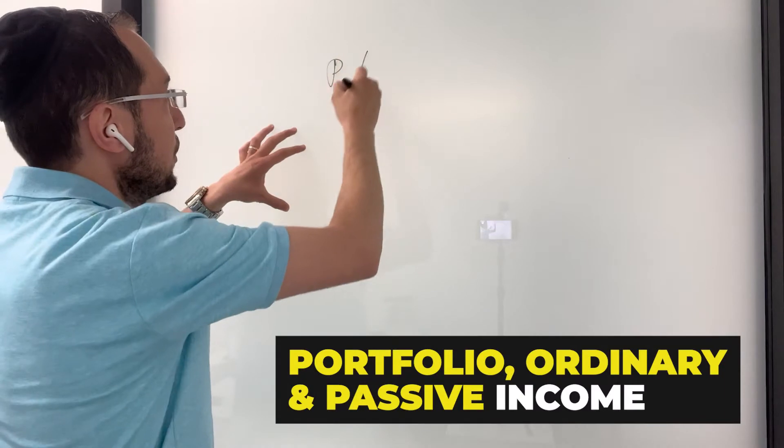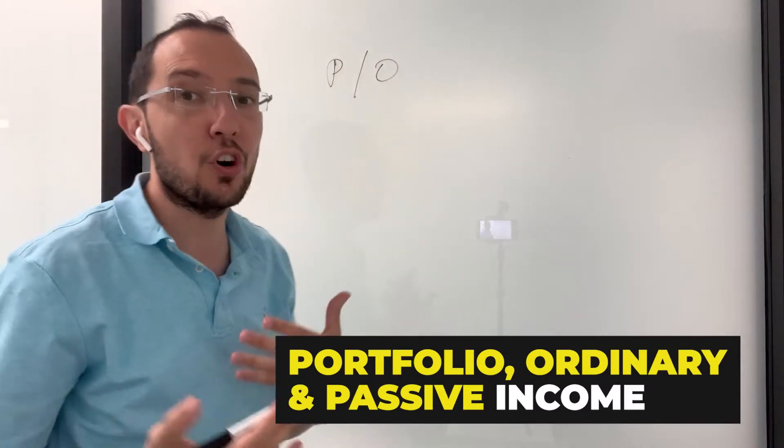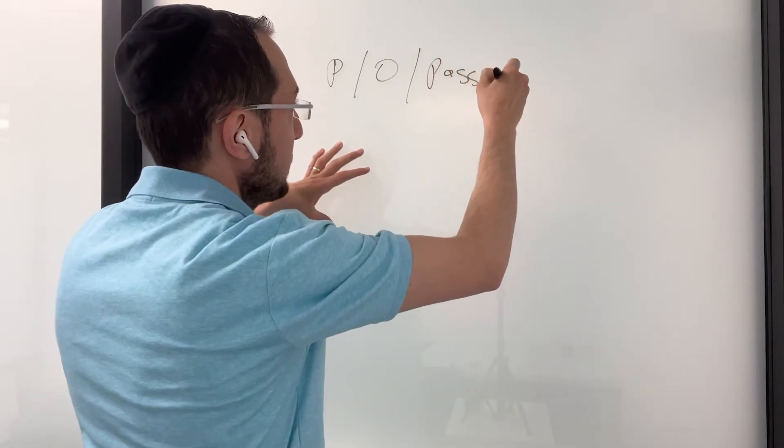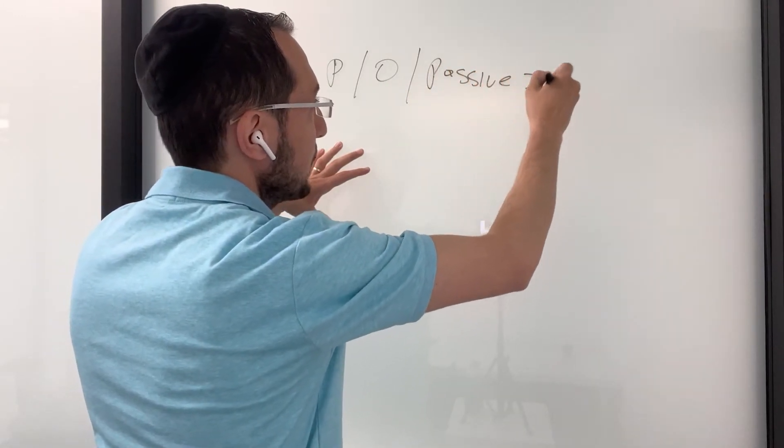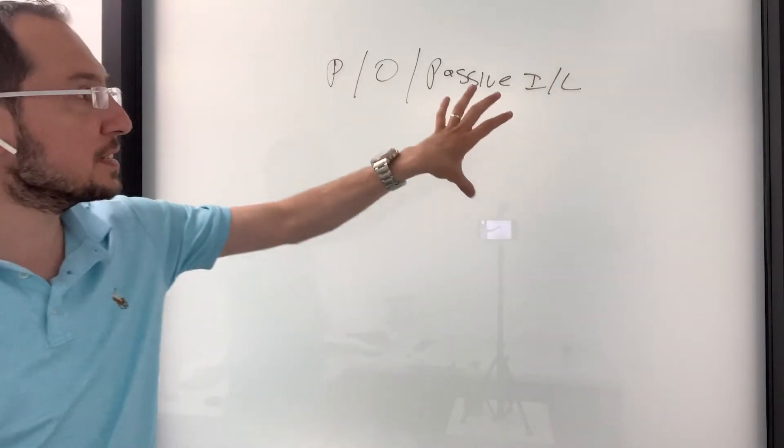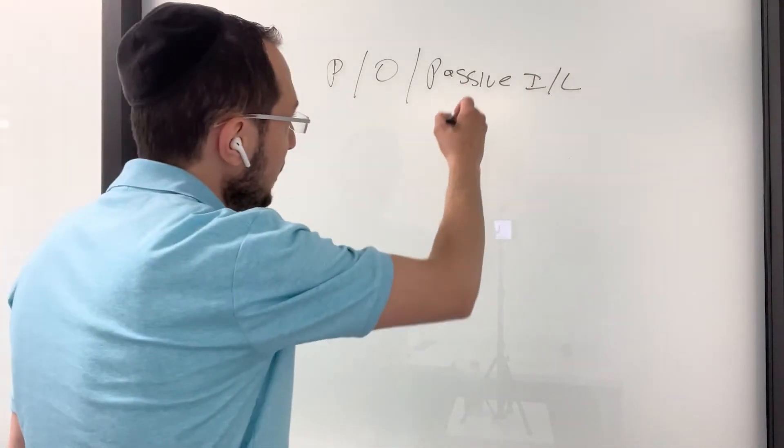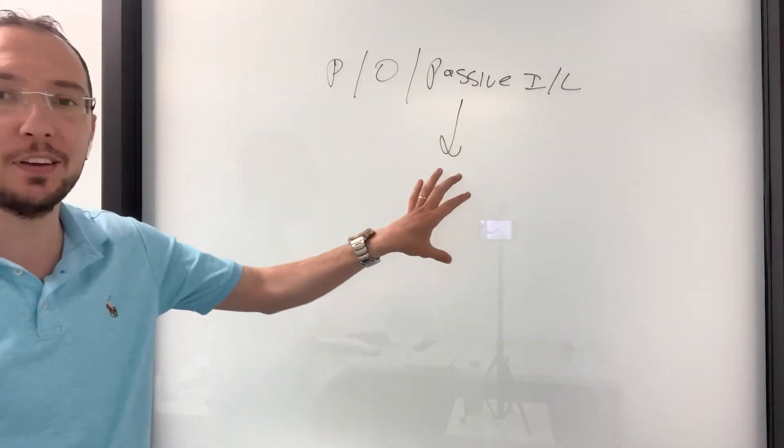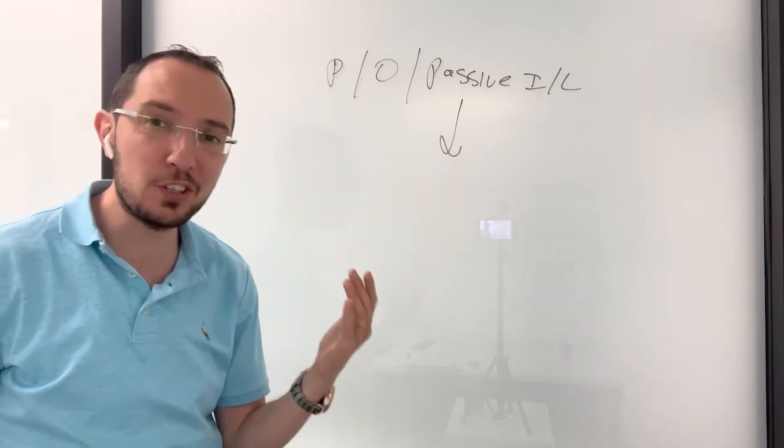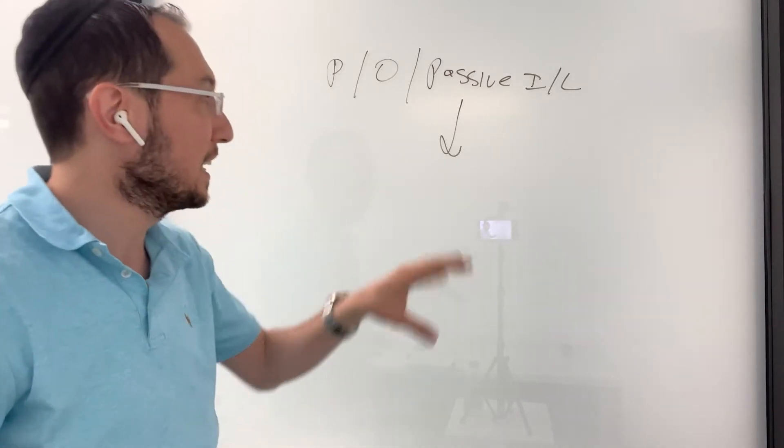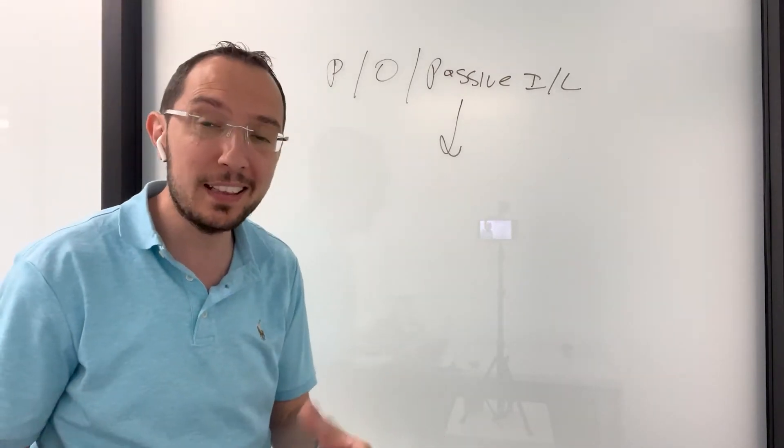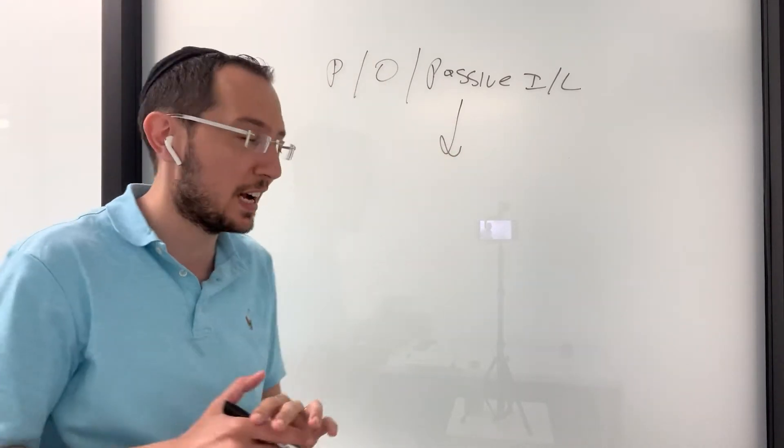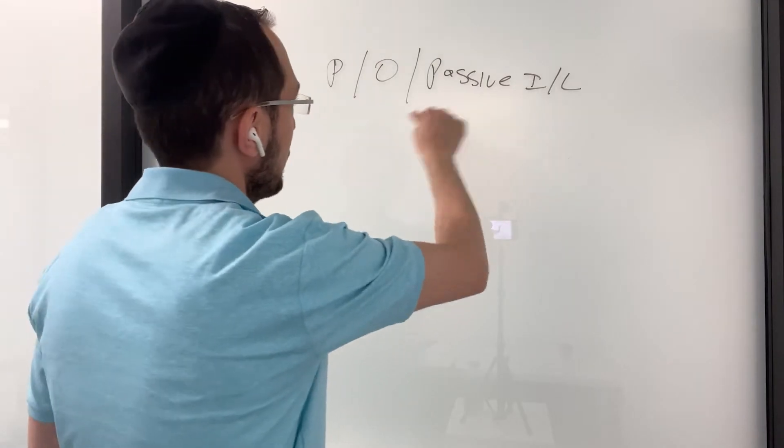We've got portfolio income, we've got ordinary income, which is your earned income, and then we've got what's called passive income or loss. This area of tax code is so complex and so preventive from having people taking advantage of this when they buy real estate. It's unbelievable, but just like with anything else, you can actually go around it with legal tax strategies knowing the tax code, and that's exactly what we're going to discuss today.